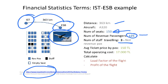The average ticket price for the paying passengers was 150 Turkish Lira. Average means some people pay more and others pay less, but as an average it was 150 Lira. The total operating cost of that flight — including fuel, handling, crew, and so on — was 17,000 Turkish Lira. Now let's learn the terminology.